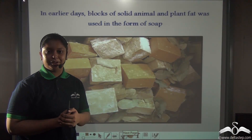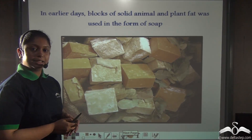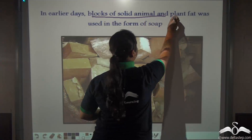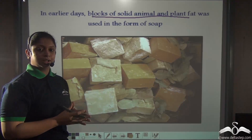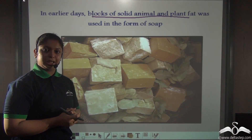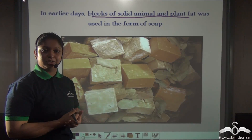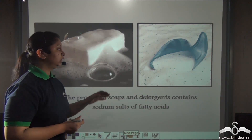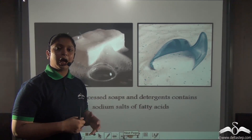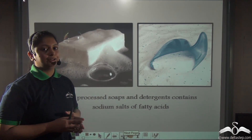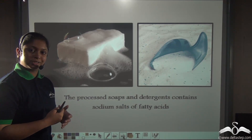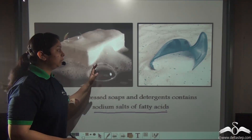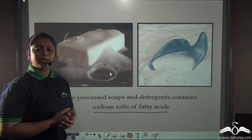Let's study about another man-made material: soap. In earlier days, soaps were actually blocks of solid plant and animal fat which were used as soap. Earlier, soaps were natural material because those were not modified by man. But nowadays, the processed soap and detergent which you use are man-made materials because these are made by man in factories. Soaps and detergents used nowadays are sodium salts of fatty acid — that is, a chemical is used in making these items. Therefore, this is again a man-made material.